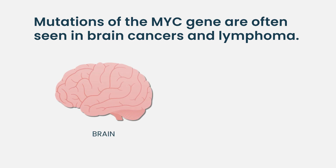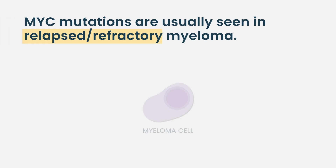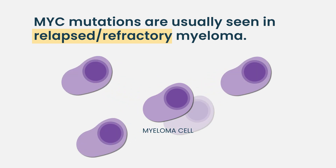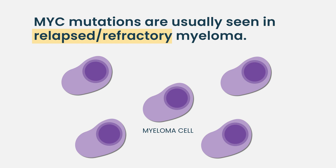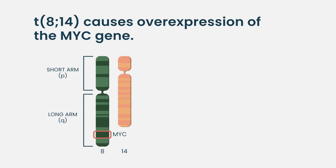MYC is a gene commonly seen in some brain cancers, but it's also seen in lymphoma and myeloma. In myeloma, it's not quite so common until the disease has relapsed a few times, and then it can be very common — those cells can grow incredibly quickly. It gets expressed because there is a translocation, where a bit of chromosome 8 goes onto a bit of chromosome 14.